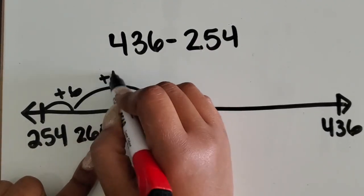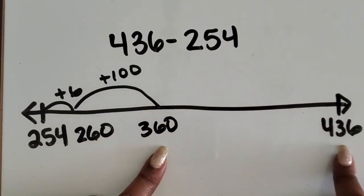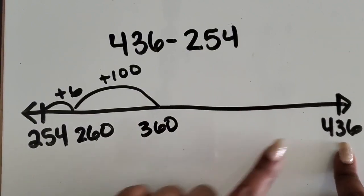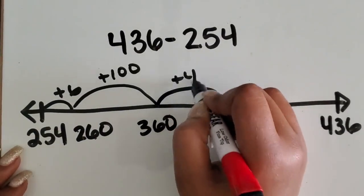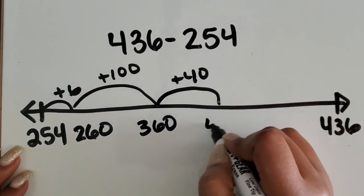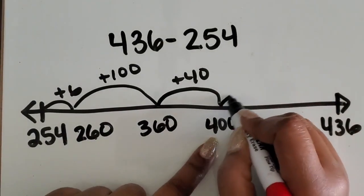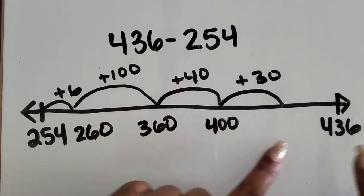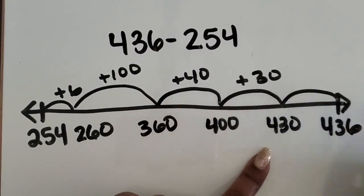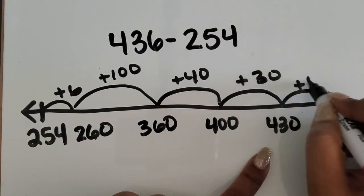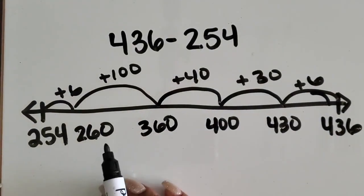If I add one hundred, that gives me three hundred sixty. Adding another hundred would get me farther than my stopping point, so instead I'm going to add forty to get to the next hundred, which is four hundred. Then I can add thirty to get to four hundred thirty, and then add six to get to four hundred thirty-six.